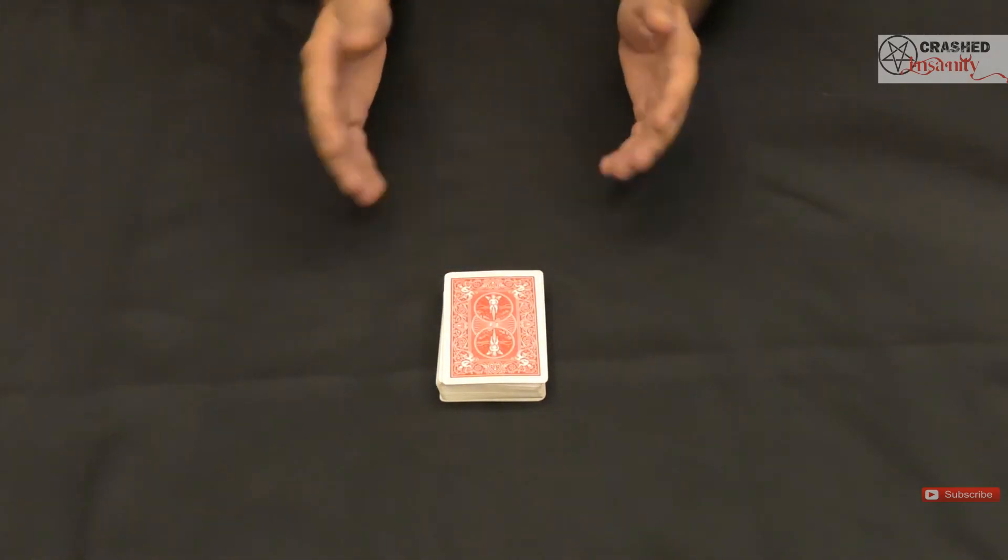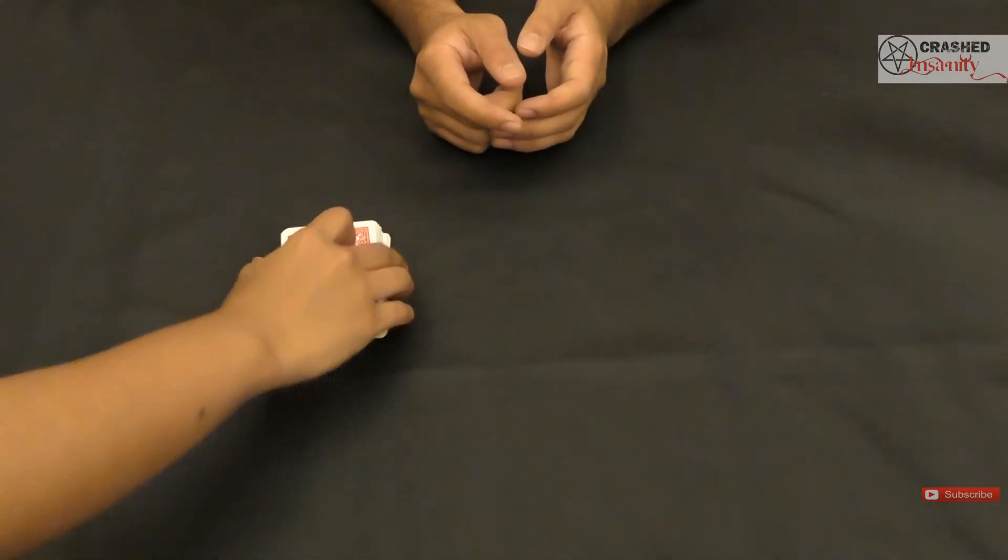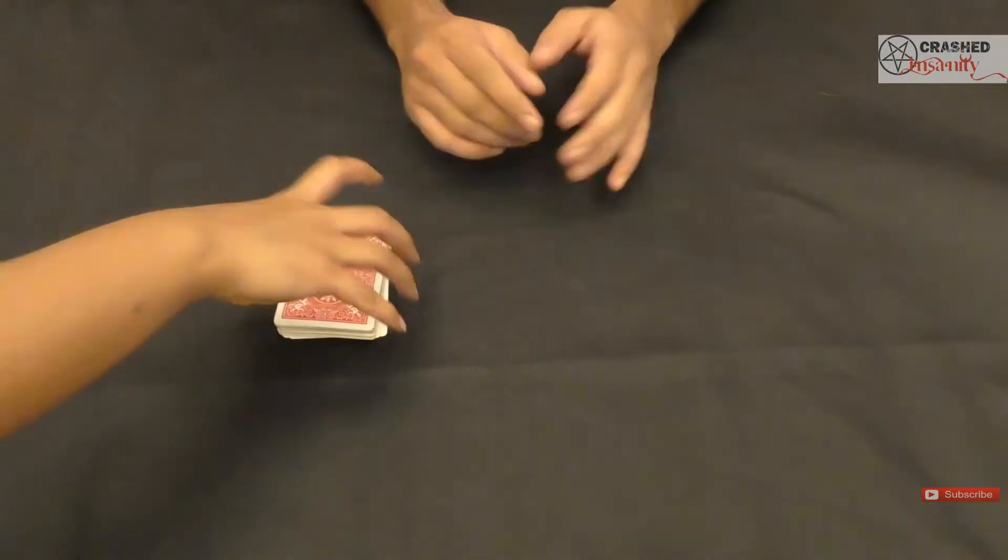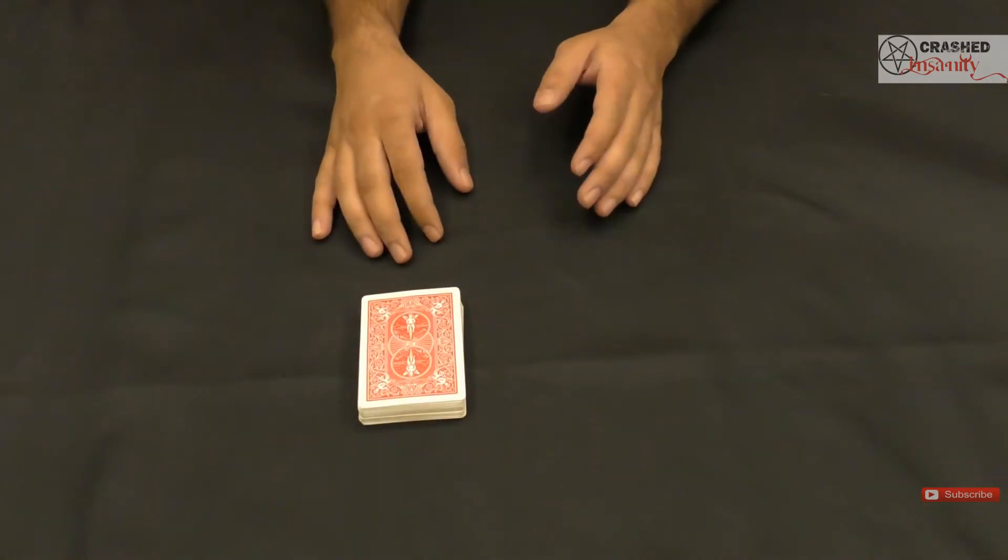We'll ask the spectator to cut the deck anywhere and bury the card. Go ahead and cut the deck. Now there is no control and the card has been completely lost in the middle of the deck without any break.